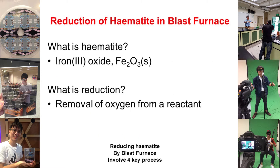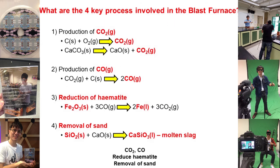Reducing in blast furnace involves 4 key processes. CO2 is formed, CO reduces the metal oxide, and removal of sand occurs.